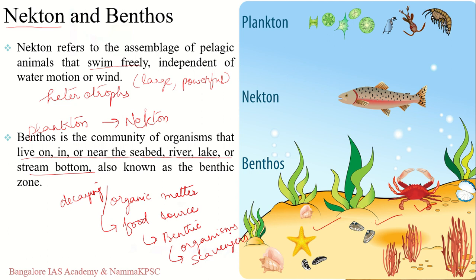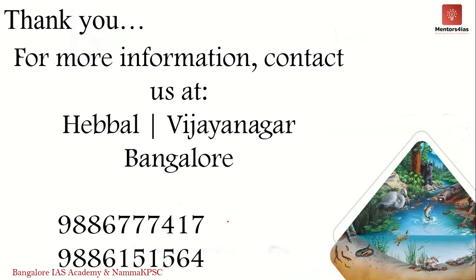Benthic life is not restricted only to scavengers and detritivores — for example, stingray is a fish that may also be part of the benthic community, and aquatic plants in shallow waters can also form part of benthic life. This completes our introduction to aquatic ecosystems and the different types of aquatic organisms. If you have any doubts, please write to us in the comment section. Thank you.